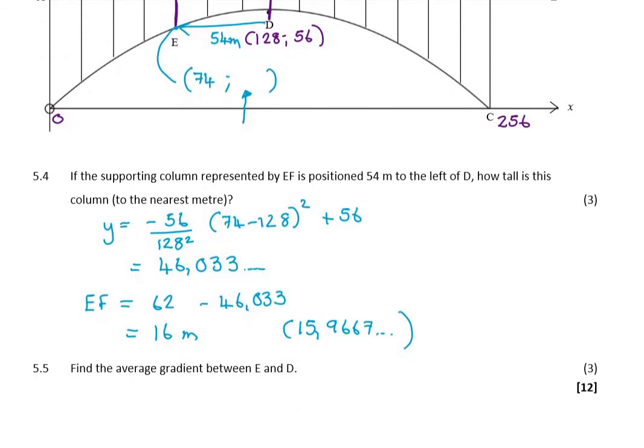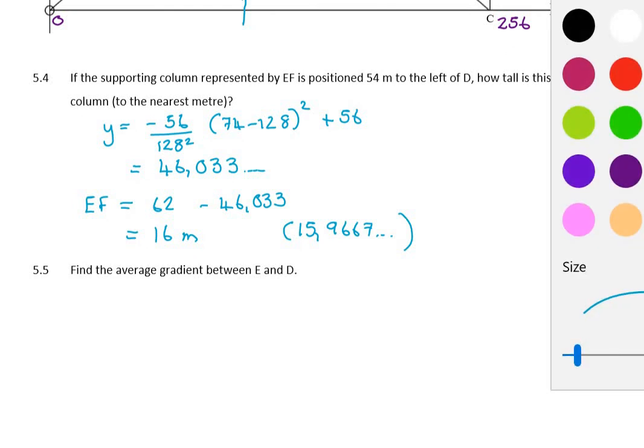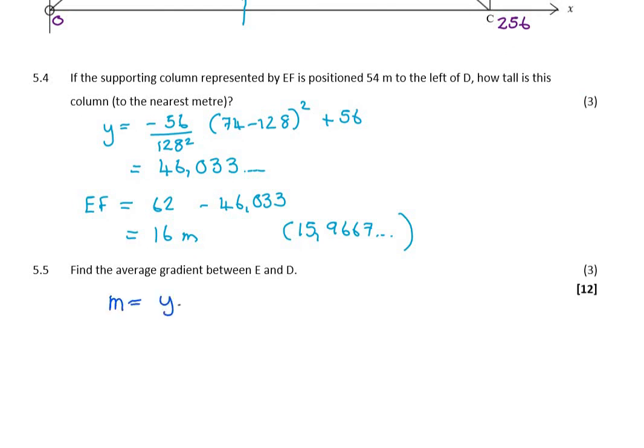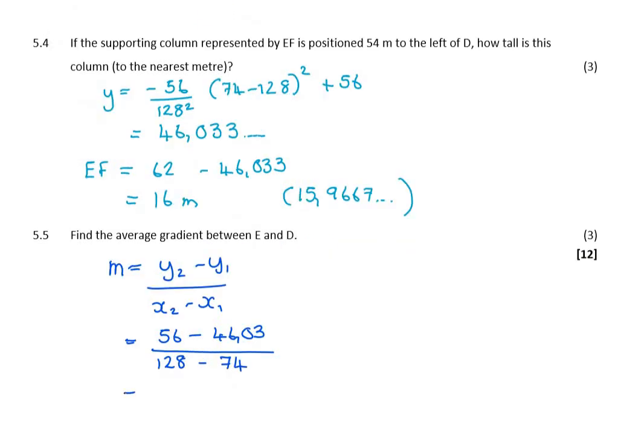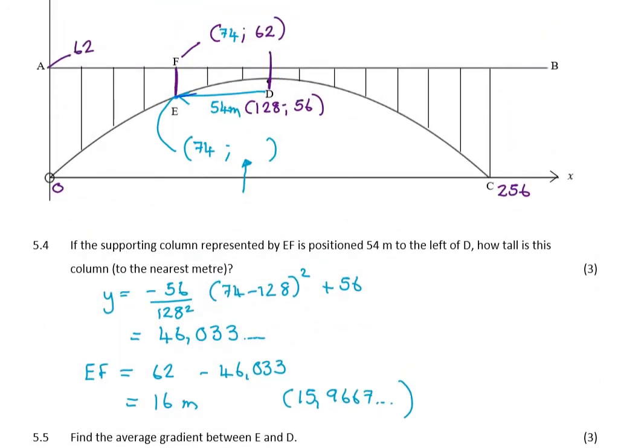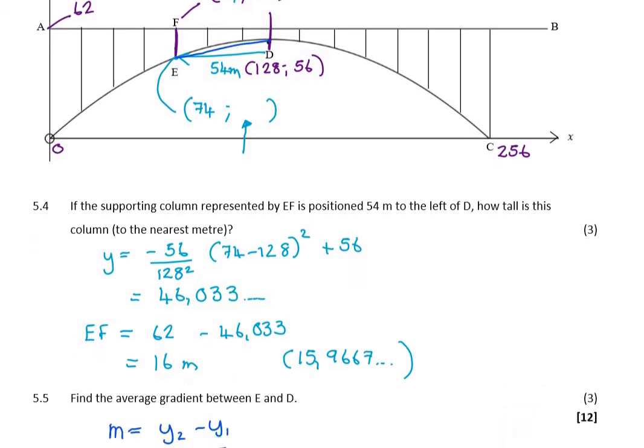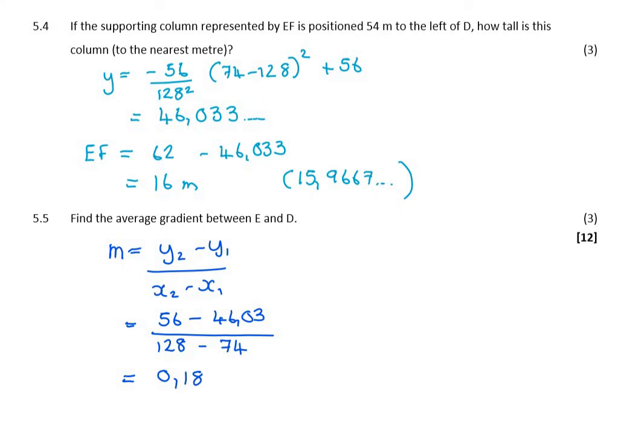Okay, my last question, average gradient. What is the average gradient between E and D? This is just a three-mark question because it should be fairly easy. Average gradient is change in y over change in x. Fortunately, I already have all these coordinates. The value at D was 56 minus 46.03, divided by 128 minus 74. I'm obviously going to get a horrible number, so we just round it to two decimal places, and I get 0.18. That's positive but quite shallow. If I look at where this average gradient would be, it would be the straight line joining E and F. So it should be positive, and it does seem quite a shallow line.